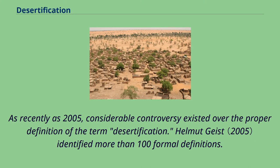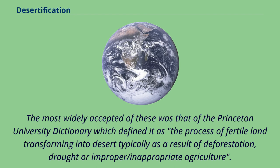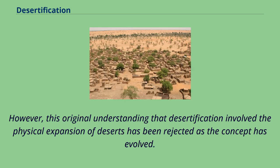In recent times, the potential influences of human activity, improper land management, deforestation and climate change on desertification is the subject of many scientific investigations. As recently as 2005, considerable controversy existed over the proper definition of the term desertification. Helmut Geist identified more than 100 formal definitions. The most widely accepted was that of the Princeton University Dictionary, which defined it as the process of fertile land transforming into desert, typically as a result of deforestation, drought or improper agriculture. However, this original understanding that desertification involved the physical expansion of deserts has been rejected as the concept has evolved.